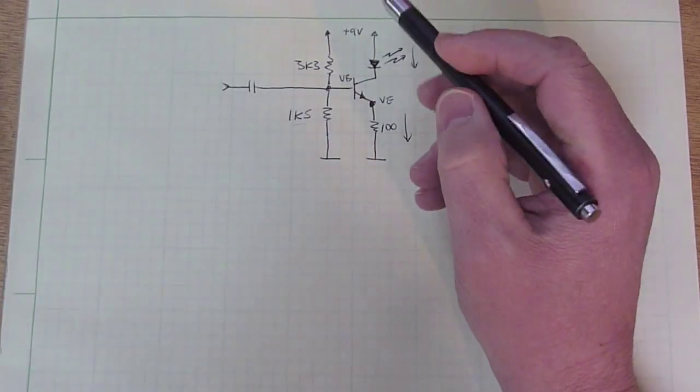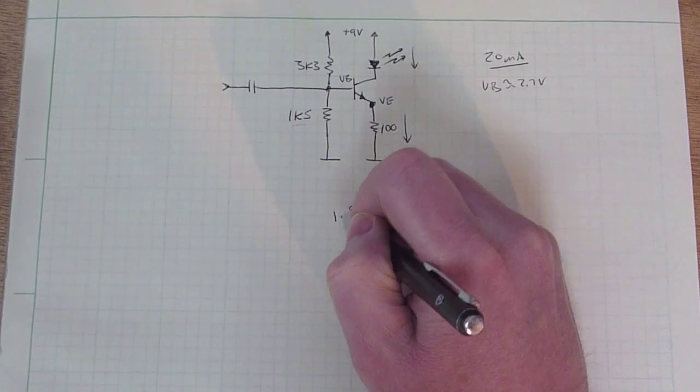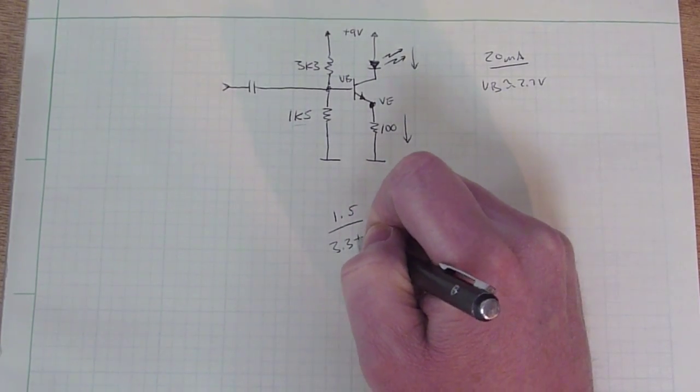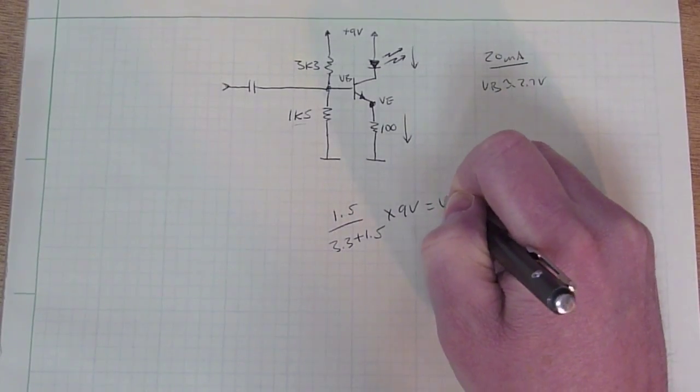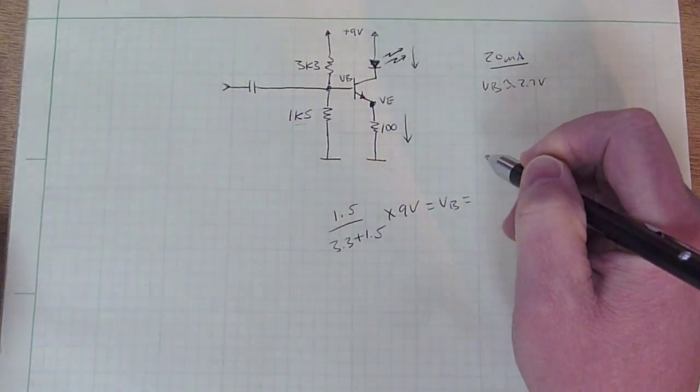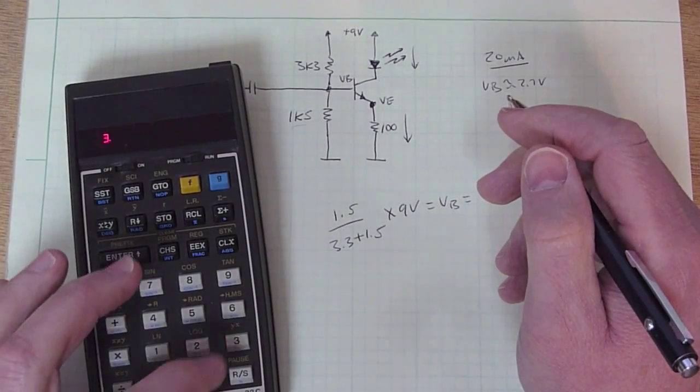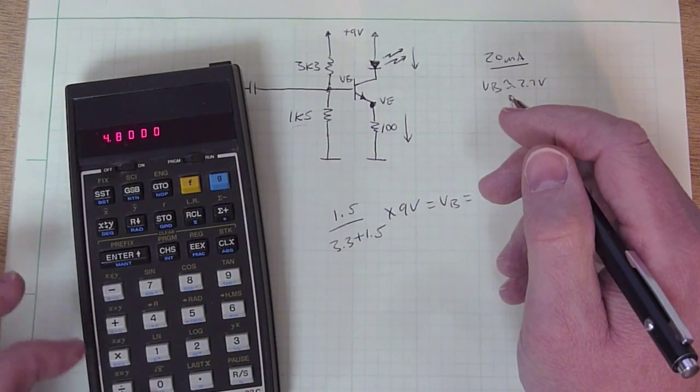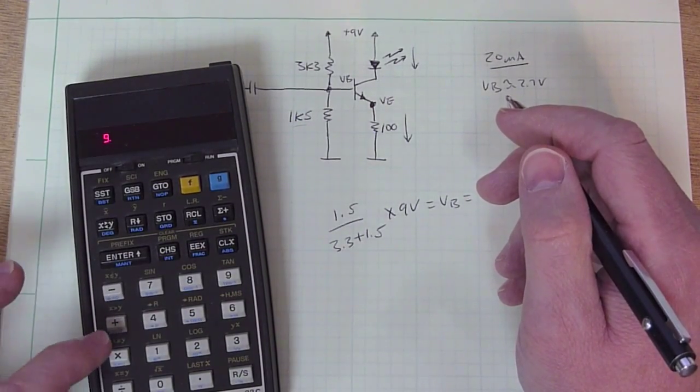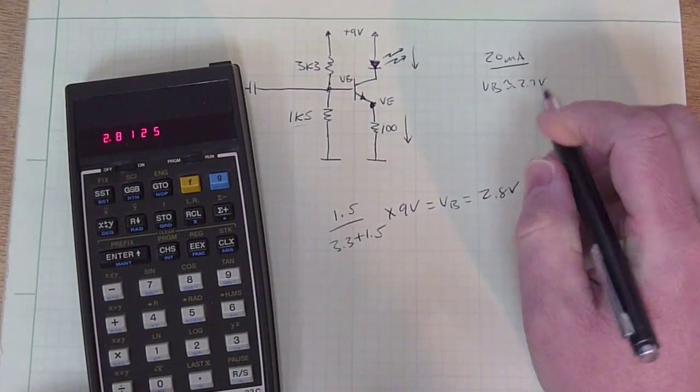If we go through and do the calculation, we want to calculate 1.5 over 3.3 plus 1.5 times 9 volts, and that equals VB. Let's go through the calculation. We get 2.8 volts, which is pretty close to what we wanted.